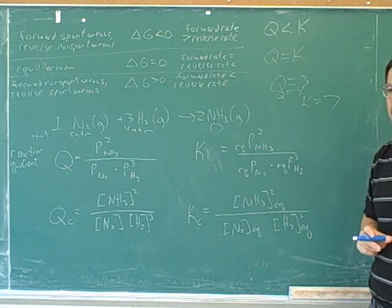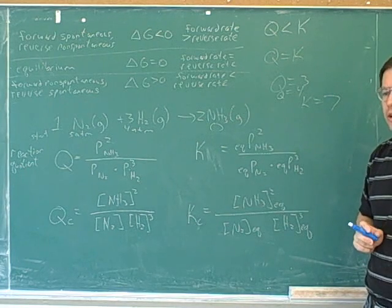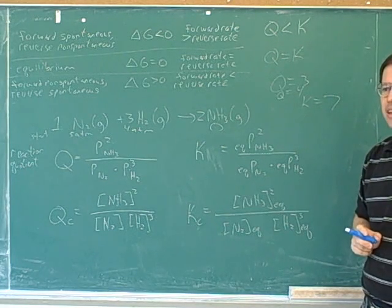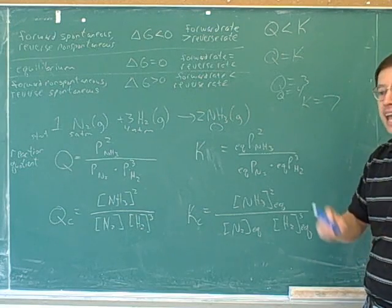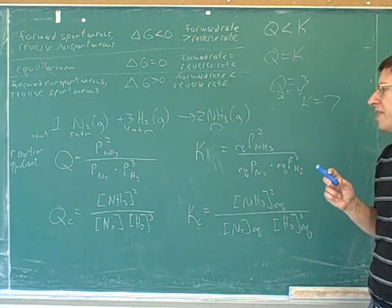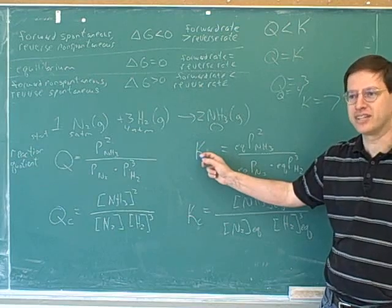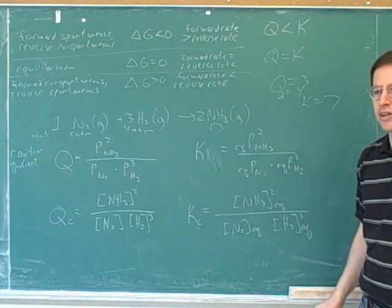By the way, we can already notice here, as the reaction goes forward, who is changing? Q or K? Q. Q. K is not changing. That's a common mistake. That's why it's called the equilibrium constant. It's not changing for any particular reaction.